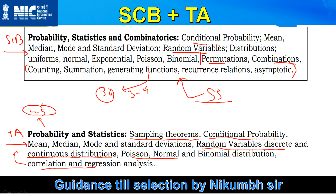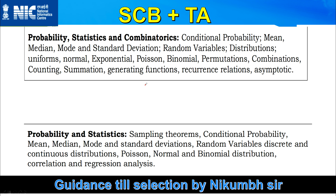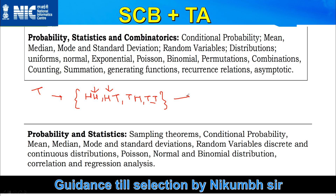Let me give you a brief introduction to random variables to help you understand. In the mentorship program we will cover all of this in detail. For now, take this example: I am tossing a coin twice. My sample space has these events — first toss head and second toss head, first toss head and second toss tail, first toss tail and second toss head, and both tails.